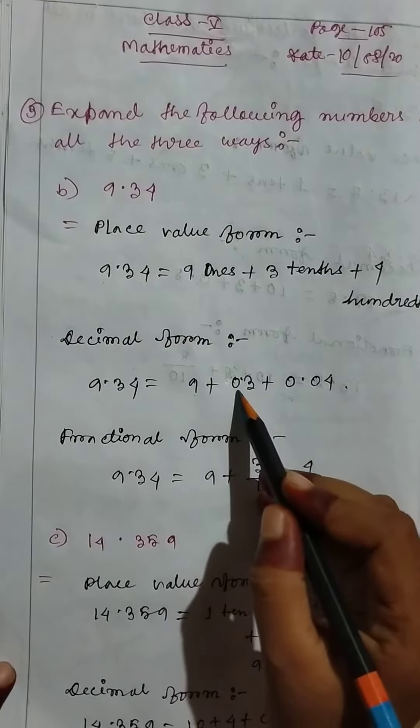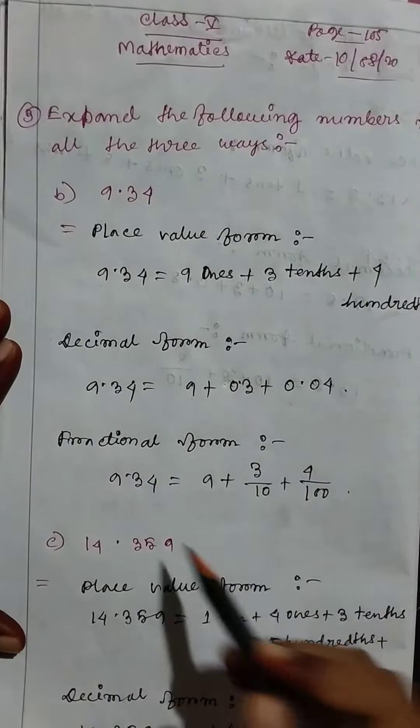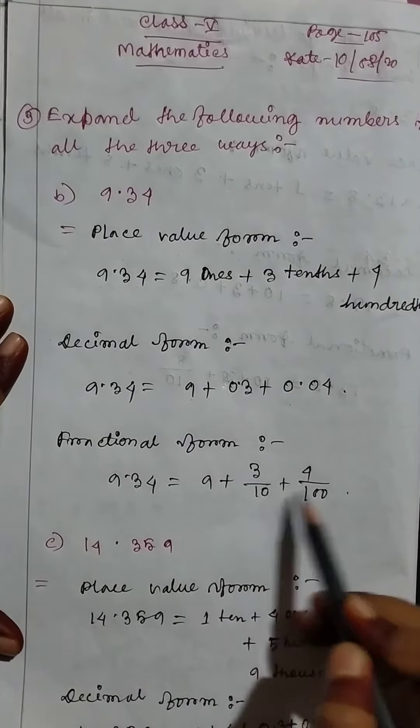Then fractional form: 9.34 equals 9 plus 3 by 10 plus 4 by 100.